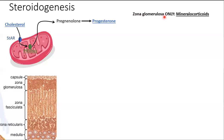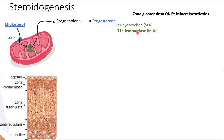In the zona glomerulosa only — the most superficial region of the adrenal cortex — progesterone is going to be synthesized into the mineralocorticoids, which are responsible for balancing minerals within our body. There are a couple of enzymatic steps: one in the smooth endoplasmic reticulum and one in the membrane of the mitochondria. When both of these enzymes work on their substrates, they ultimately produce the molecule called corticosterone.